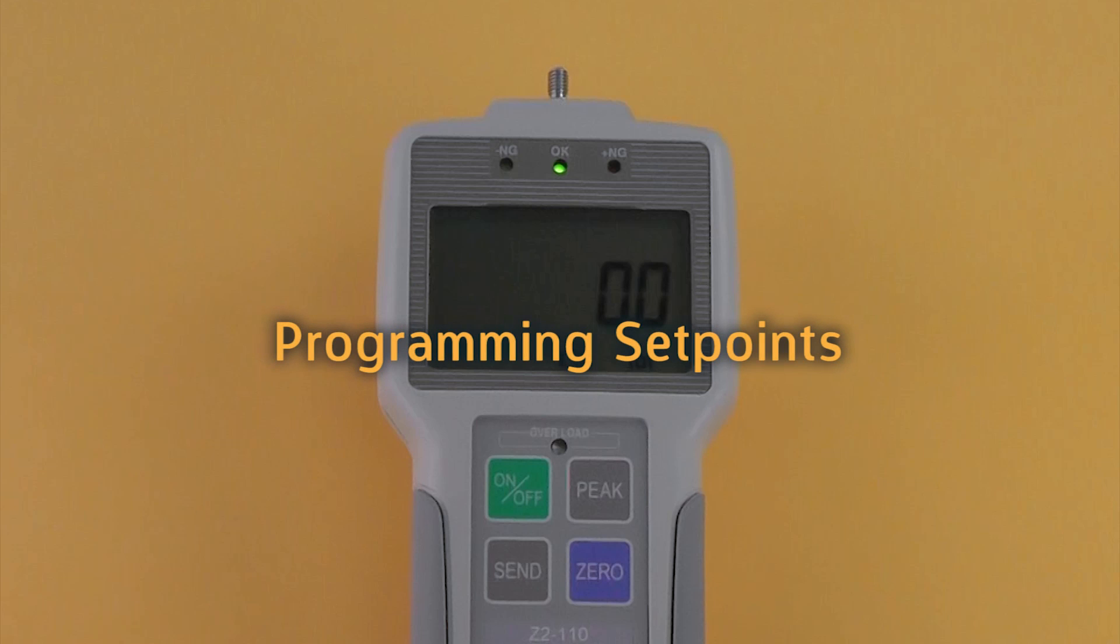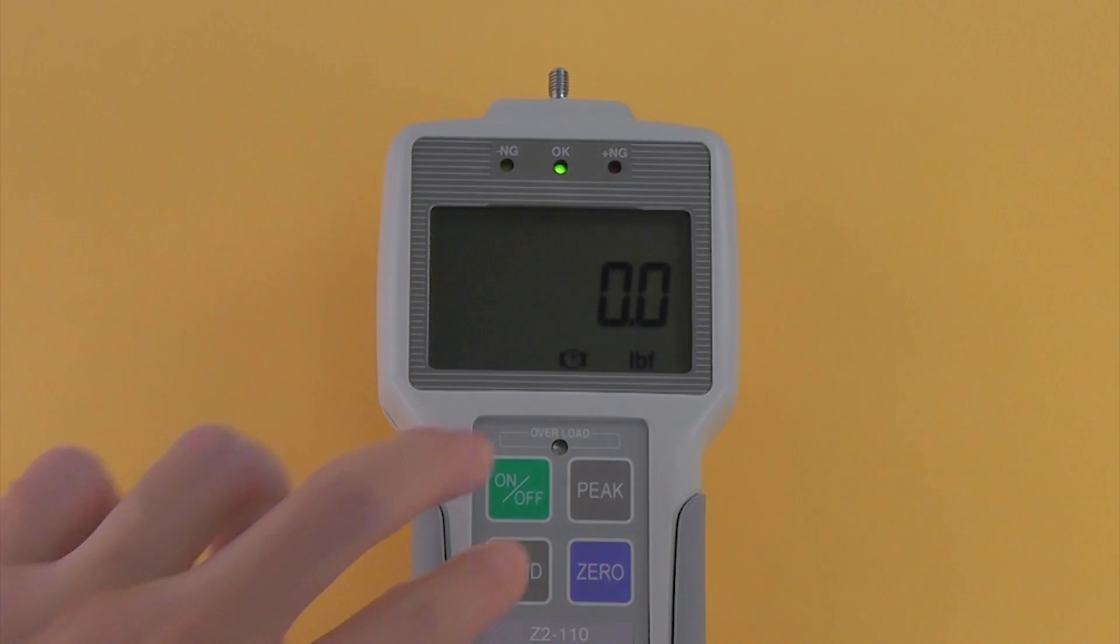Programming high and low set points. Turn on the gauge. Press peak and zero for three seconds to enter power on programming mode. Press peak to display CF9 F1. Then press send.